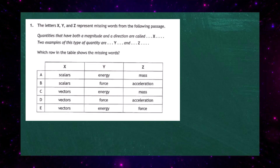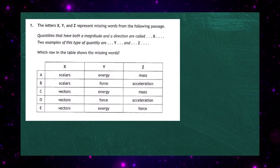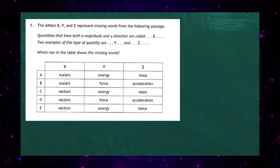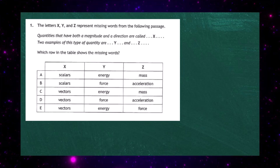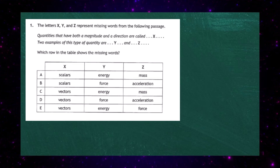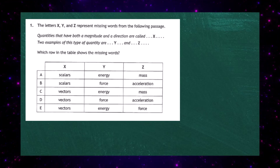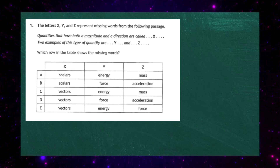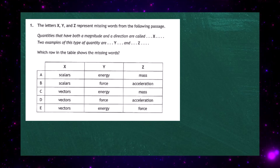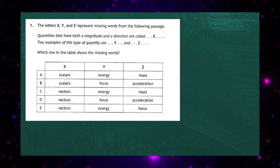Question one from the 2023 National 5 Physics paper from the SQA. The letters X, Y and Z represent missing words from the following passage: quantities that have both a magnitude and a direction are called X. We're asked to give two examples of this type of quantity: Y and Z.